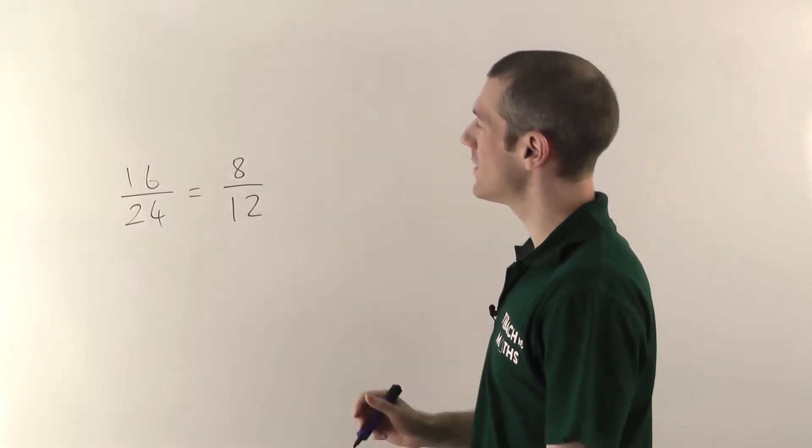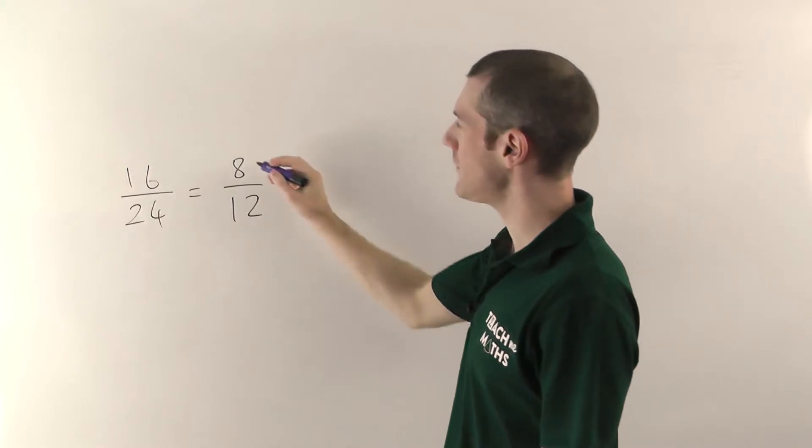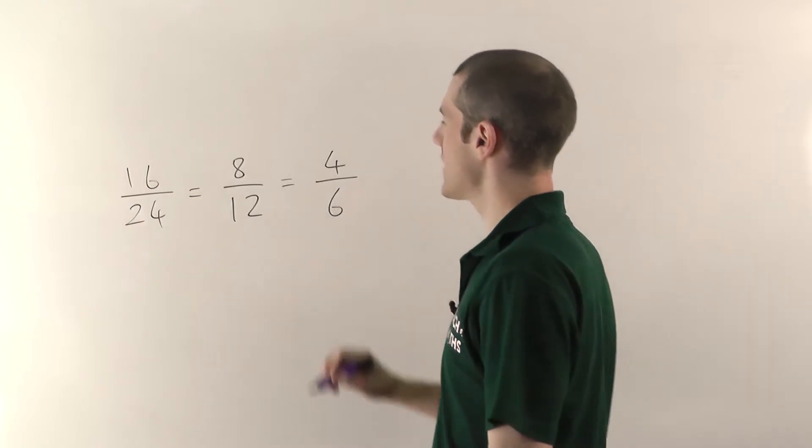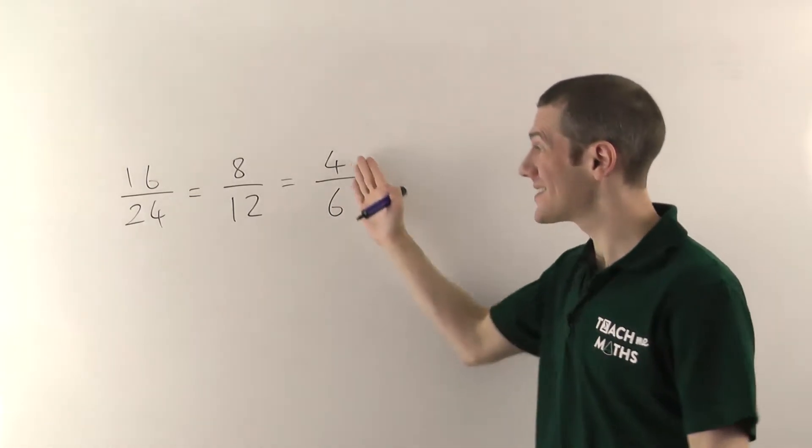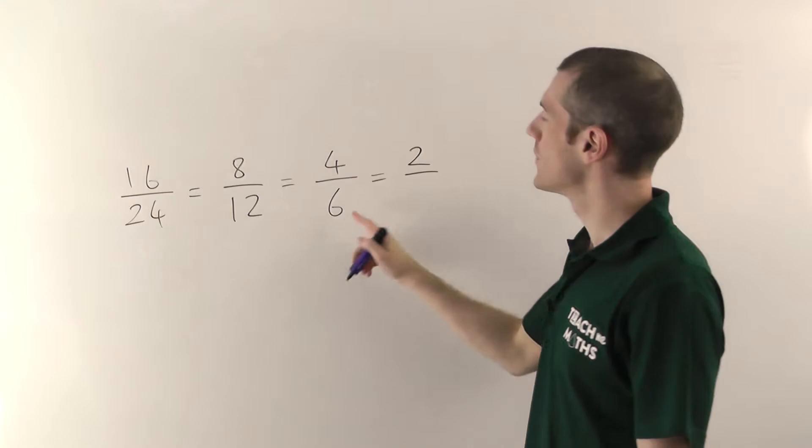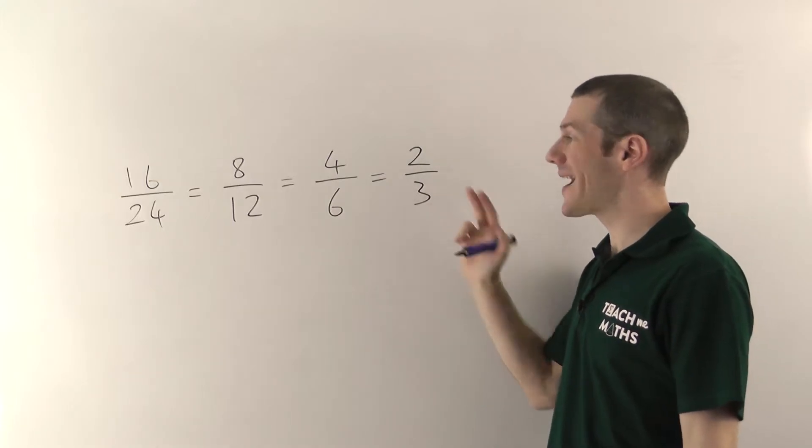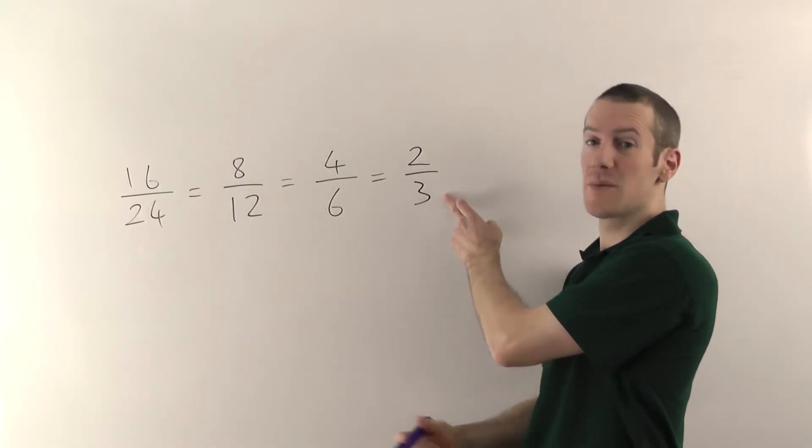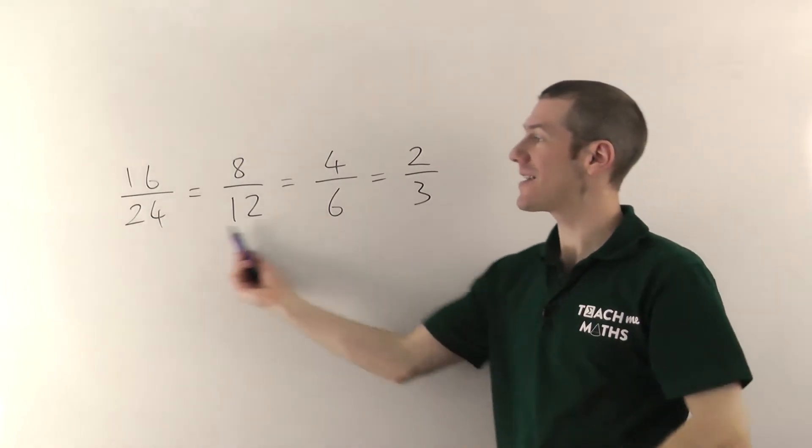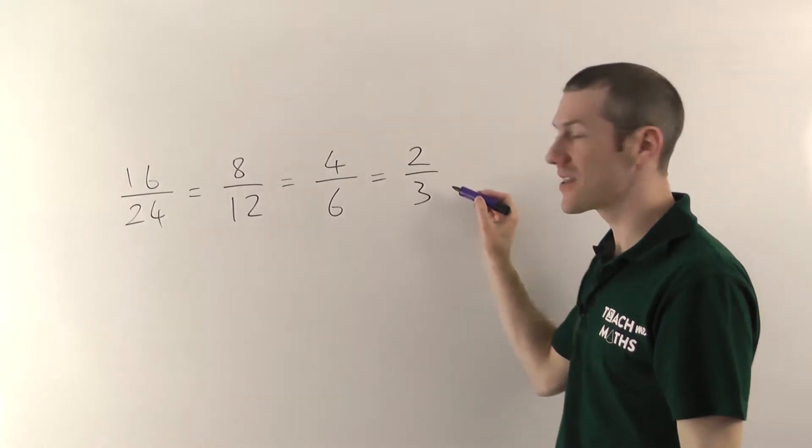So what divides into 8 and 12? Well 2 divides into them again. They're both still even, so we'll divide it by 2 again. So 2 into 8 goes 4 times and 2s into 12 go 6 times. Great, now they're even smaller. But we can still divide them both by 2, they're still even. So 2s into 4 go 2, 2s into 6 go 3. Now I can't divide them by anything. There's no number that divides into 2 and 3. So this is the smallest numbers I can get. This is the simplified or cancelled version of the fraction. And this is the one we prefer to any of these. Whenever you simplify or cancel, you must go all the way. You've got to keep going until you can't make the numbers any smaller.